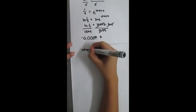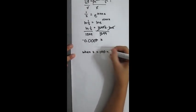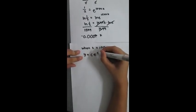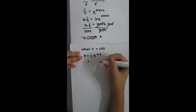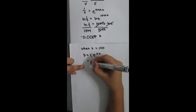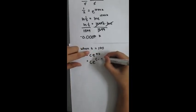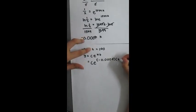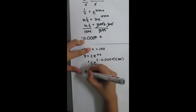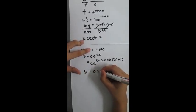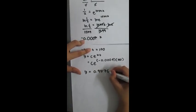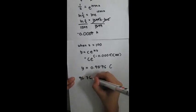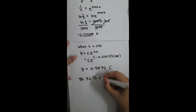When c equals 100, we substitute into the formula c times e raised to kt, where k equals negative 0.0001 and t equals 100. We get y equals 0.9576. The final answer is 95.76% remains after 100 years.